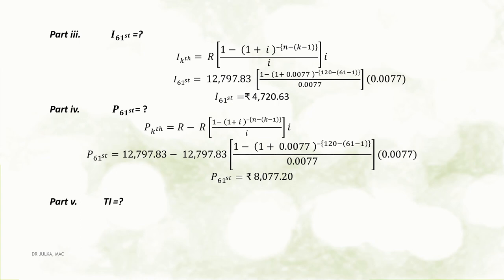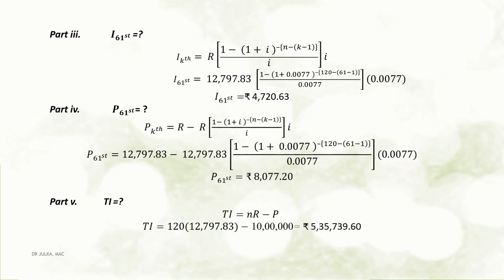Part 5: Here we want to calculate total interest. Total interest paid can be calculated using the formula: amount of installment multiplied by number of installments minus present value. After calculation, we get the total interest as Rs 5,35,739.60.